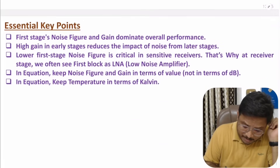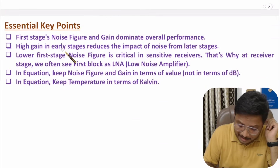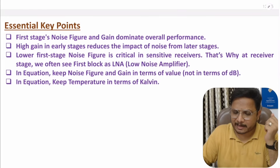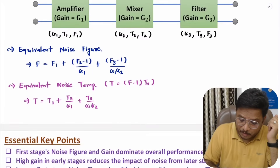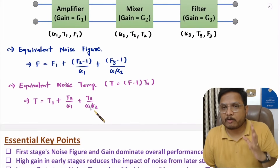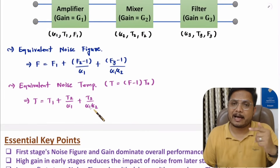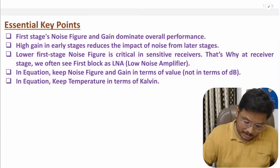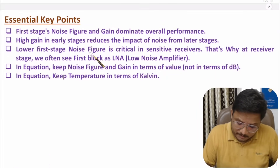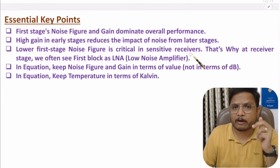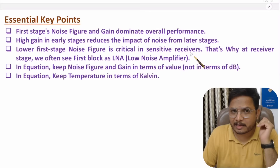The second point is that high gain in an early stage reduces the impact of noise from later stages. This can easily be understood from the equation: if you have higher gain with the first stage, that is what we are dividing later stage noise by, so the overall impact of noise is reduced. Therefore, a lower first stage noise figure is critical in a sensitive receiver.